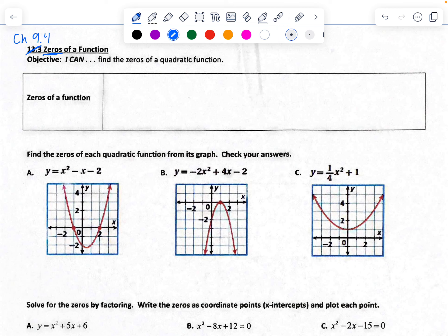The way zeros of a function works, ultimately, your first step is to set y equals 0. So your zeros will be your x values that make the function equal to 0. In terms of a graph, it's your x-intercepts.